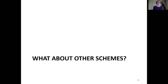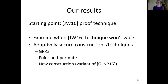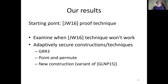The question we ask is: what about adaptive security of practical garbling schemes — optimizations of Yao's garbling scheme? Can we say anything about that? If Yao's garbling scheme has adaptive security as-is, at least for NC1 circuits, what about other garbling schemes? Our starting point is the JW proof technique. We have two kinds of results: we examine when the JW technique will not work, and we have a positive result — a new adaptively secure construction showing that certain techniques for adaptive schemes do have adaptive security, in particular for three-row reduction, and the point-and-permute technique is not in the way of adaptive security.